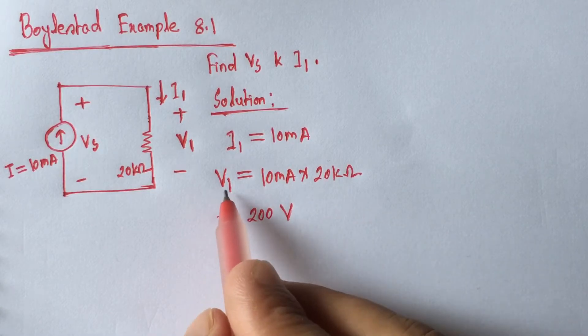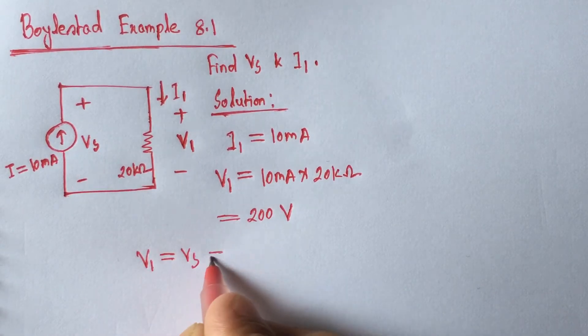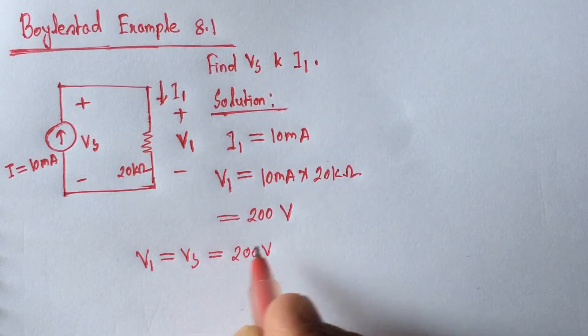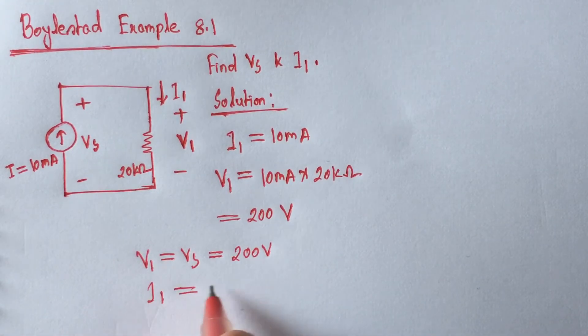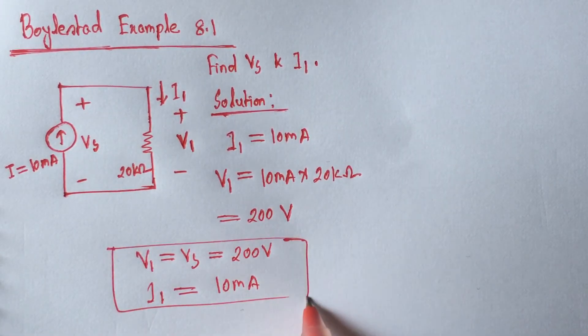Now V1 is equal to Vs, so V1 is equal to Vs is equal to 200 volts and I1 is equal to 10 mA. These are the answers.